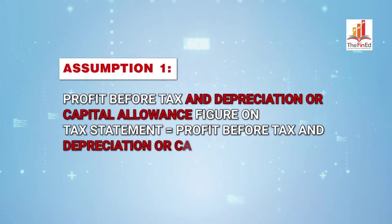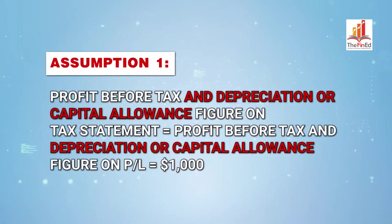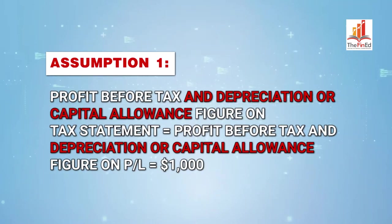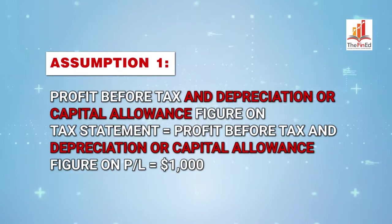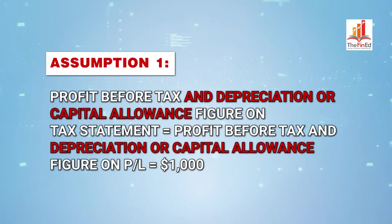I'm going to be extending this example further today by making three important assumptions. Assumption number one: the profit before tax and depreciation or capital allowance is exactly identical in Alpha's P&L and tax statement, and that figure comes to $1,000 in year one.